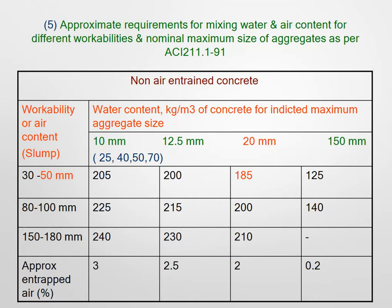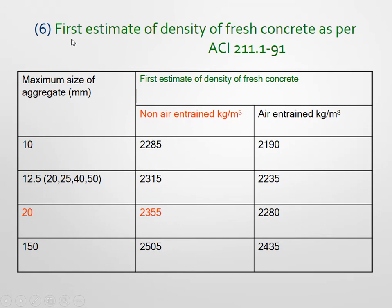Table 5 gives the approximate required mixing water and air content for different workabilities and nominal maximum size of aggregate as per ACI. For non-air-entrained concrete, if workability required is 30 to 50 mm slump and the maximum size of aggregate is 10 mm, the water content required is 205 kg/m³. If the maximum aggregate size is 12.5 mm and slump is 30 to 50 mm, the required water content is 200 kg/m³.